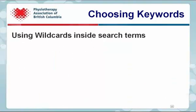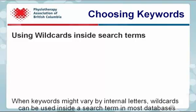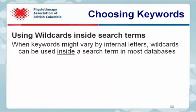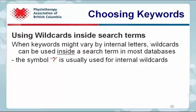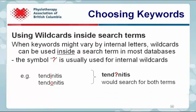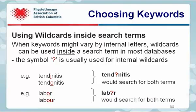It is sometimes useful to use wildcards inside search terms. When keywords might vary by internal letters, wildcards can be used inside a search term in most databases. The question mark symbol is usually used for internal wildcards. For example, tendinitis can be spelled with an I or an O — entering TEND?ITIS would search for both spellings. Similarly, labor can be spelled with an O or an OU, so entering LAB?R would search for both spellings.